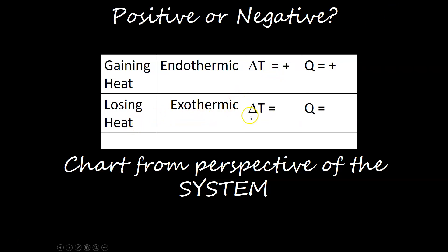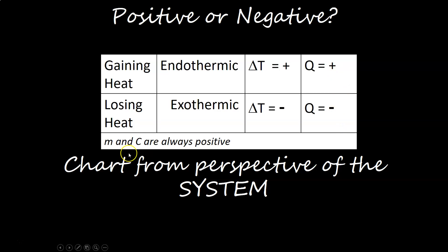Compare that to exothermic: if we lose heat, we end at a lower temperature than we started, so final minus initial gives a negative number, and Q ends up negative. If I see a Q value that's negative, that tells me right away it must be exothermic. We can look at the positive and negative signs and they tell us a lot of information. Mass and specific heat are always positive — we're never going to have a negative mass or a negative specific heat.